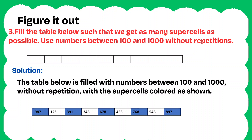Question 3: Fill the table to get as many supercells as possible using numbers between 100 and 1000 without repetitions. The first cell can be a supercell if we give the second number as 123. As 123 is not a supercell, the next number must be a supercell, so it should be greater than 130 — we give 391. The next number should be lesser, then 678, then 768, then 897. We arrange them so the table has as many supercells as possible — a total of 5 supercells.